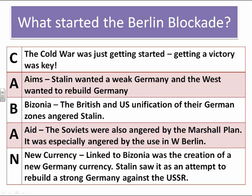So what started the Berlin Blockade? Using John D. Clare's fantastic resources, the best way to describe it is KABAM: Cold War, Aims, Bizonia, Aid, New Currency. The Cold War's just getting started, and for Stalin in particular, getting a victory here is key. He wants to show that he isn't going to get pushed around. He doesn't want to simply be always responding to situations — he wants to lead on situations. For a while now he's been seeing the rhetoric from the United States and the UK with the Iron Curtain speech, he's been seeing the Truman Doctrine, he's been seeing the Marshall Plan. He needs to do something different. Stalin wants to weaken Germany — he's wanted that ever since World War II — and the West wants to rebuild Germany. So we've got different aims here, and it's that conflict of intent that's going to be one of the big causes.